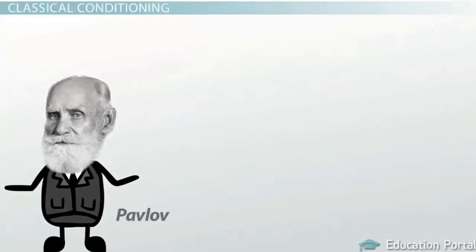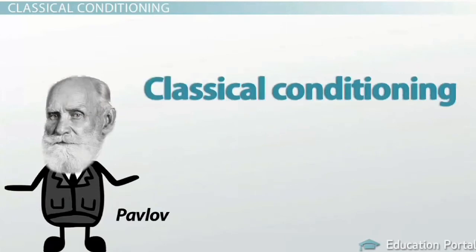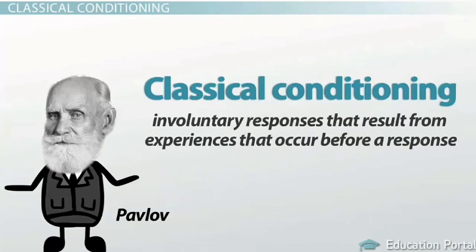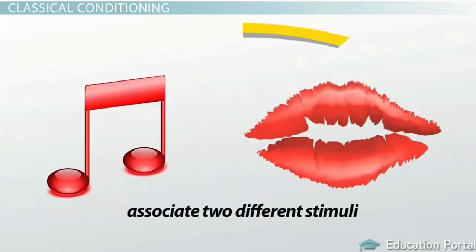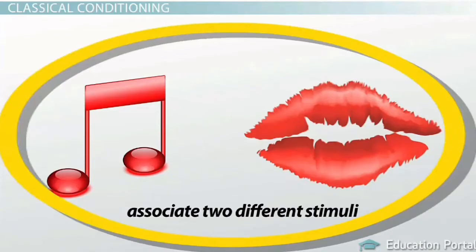First, let's visit Mr. Pavlov. He studied what is called classical conditioning, sometimes also referred to as respondent conditioning. In classical conditioning, learning refers to involuntary responses that result from experiences which occur before a response. Classical conditioning occurs when you learn to associate two different stimuli. No behavior is involved.